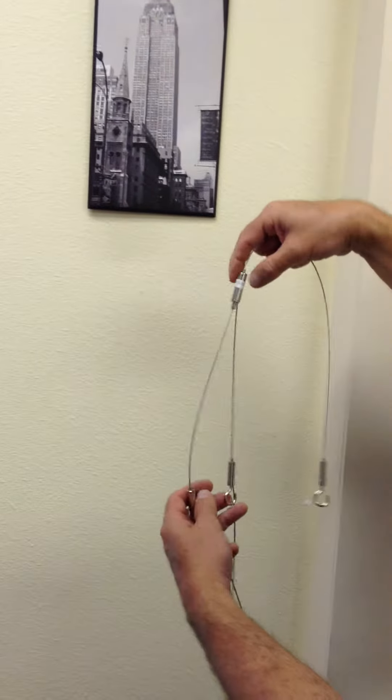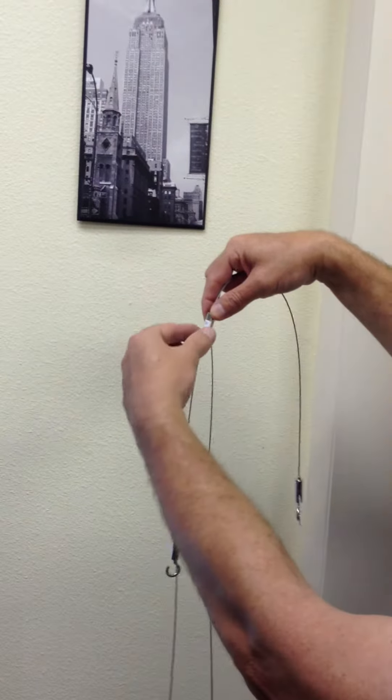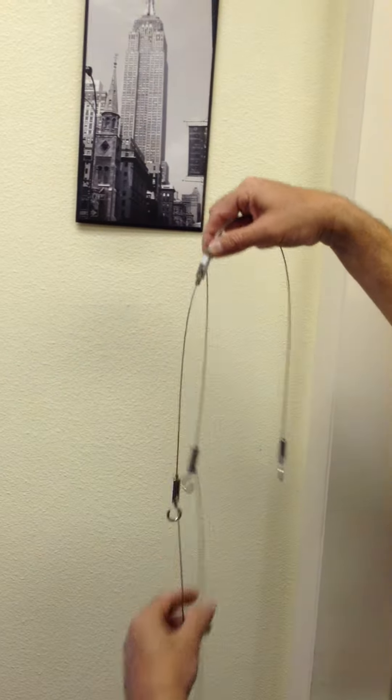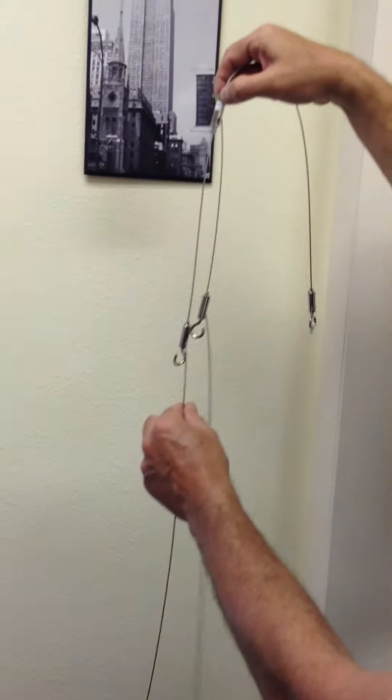The first thing you want to do is find where both of the cables are hanging out. These are going to be pointing down. The longer of the two cables is going to be for the light sensor, the shorter one for the monitor.